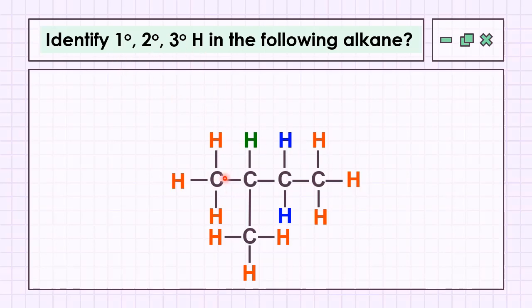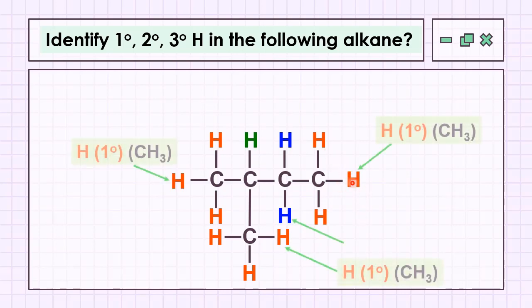Let's have a look at the carbon bearing the red hydrogen first. This carbon bearing the hydrogen directly attached to it has only one carbon, means all nine hydrogens highlighted in red belong to primary hydrogen.